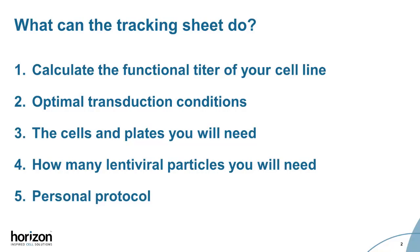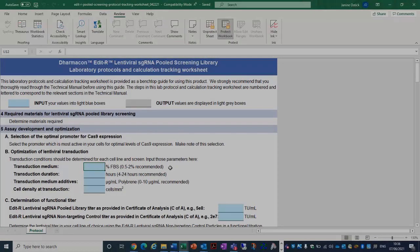In this walkthrough, values you estimate will be marked with a red box. The tracking worksheet also provides a personalised protocol for your primary screen and PCR prior to NGS. This worksheet is designed to be used alongside the technical manual. Please refer to this for additional information.